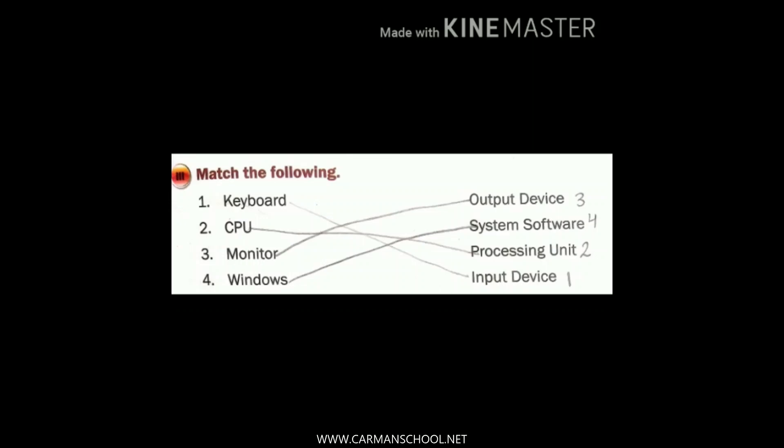Now let's start Match the Following. You have to write the word, put a dash, and write the correct answer in front of it. I have written numbers in front of the words so the correct answer can be found. Number one: keyboard — it is an input device because it helps us give instructions to the computer. Number two: CPU — it is a processing device, it comes under the processing unit.